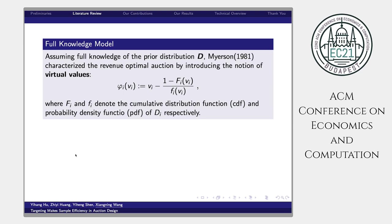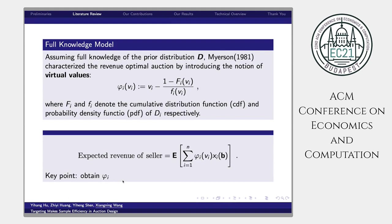In his work, Myerson observed that the expected revenue of seller is equal to the virtual welfare defined in the right-hand side. Therefore, to solve this problem, the key point is to obtain virtual value phi. However, it is usually impractical to know exactly D.